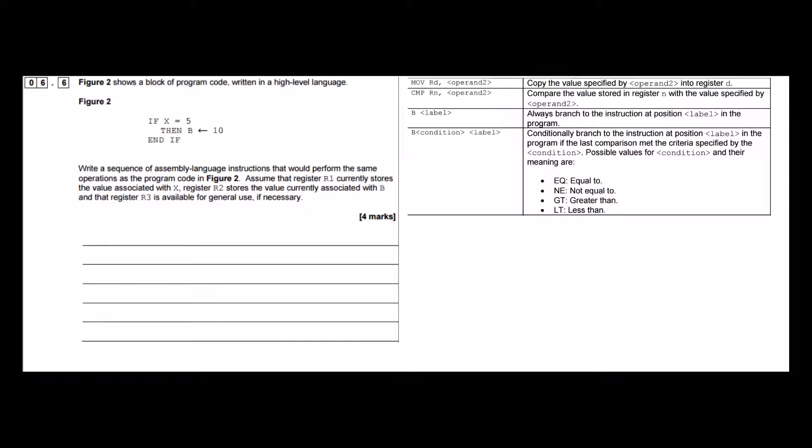We're going to have to do something with a condition here in our assembly. We're going to conditionally branch the instruction at position label in the program if the last comparison met the criteria specified by the condition. And this description of this branch instruction mentions a comparison, so we can't just go straight into the branch instruction because we haven't done this part of the high level program here, the comparison.